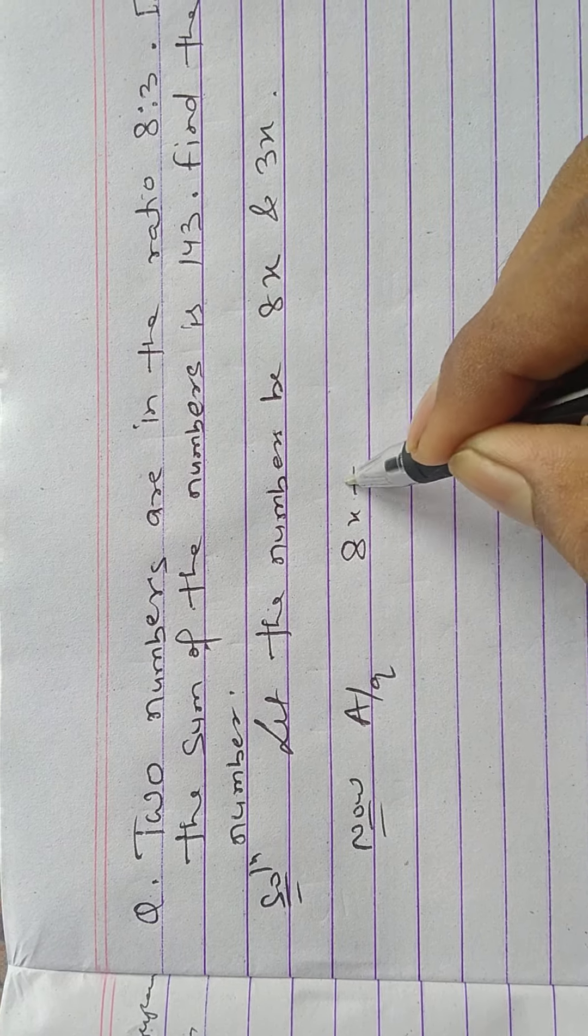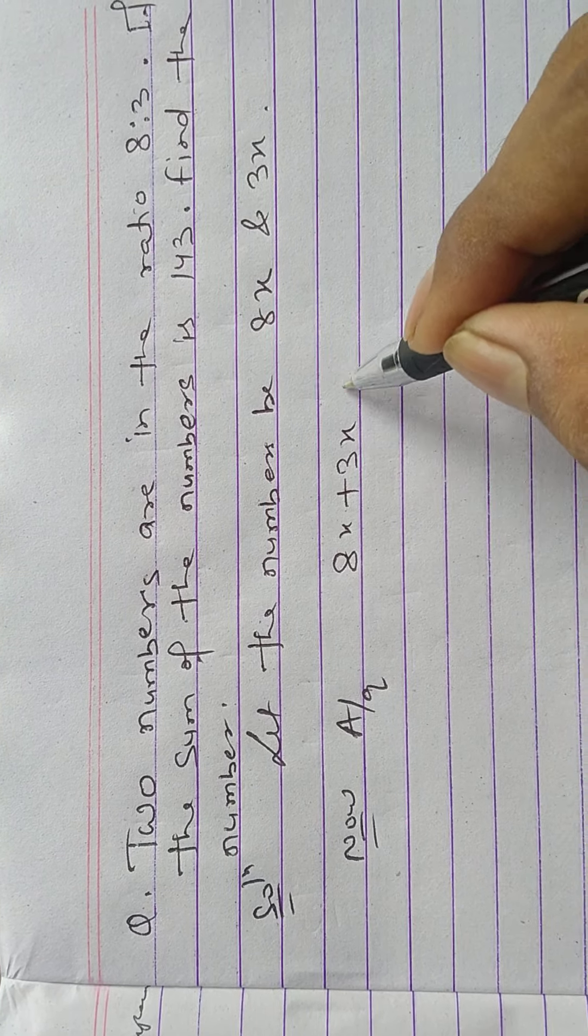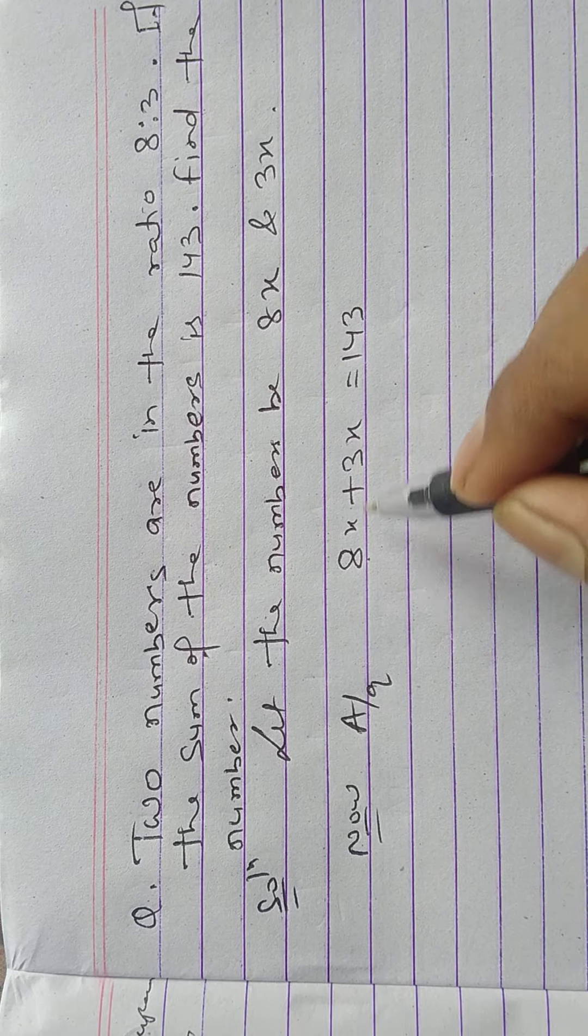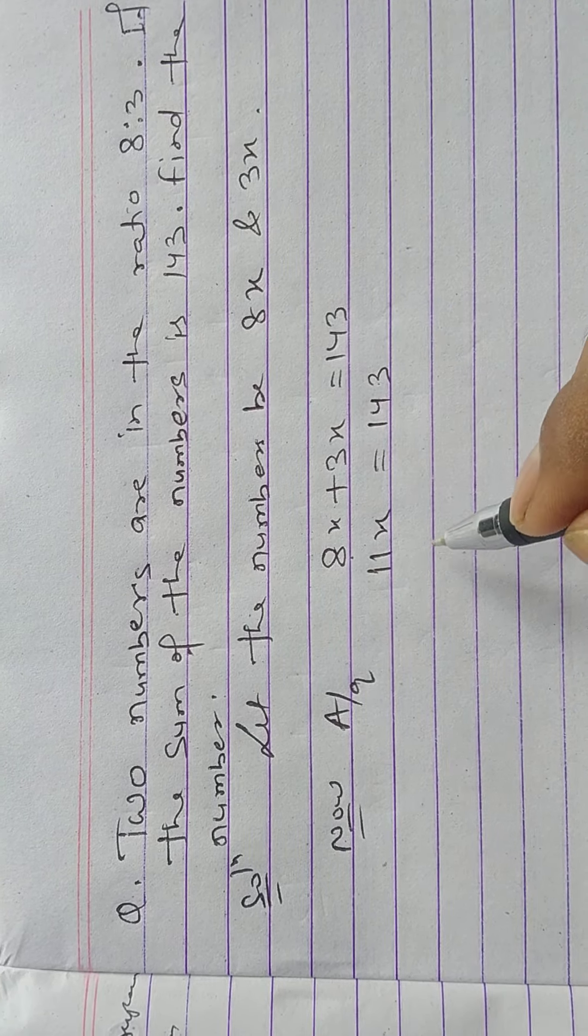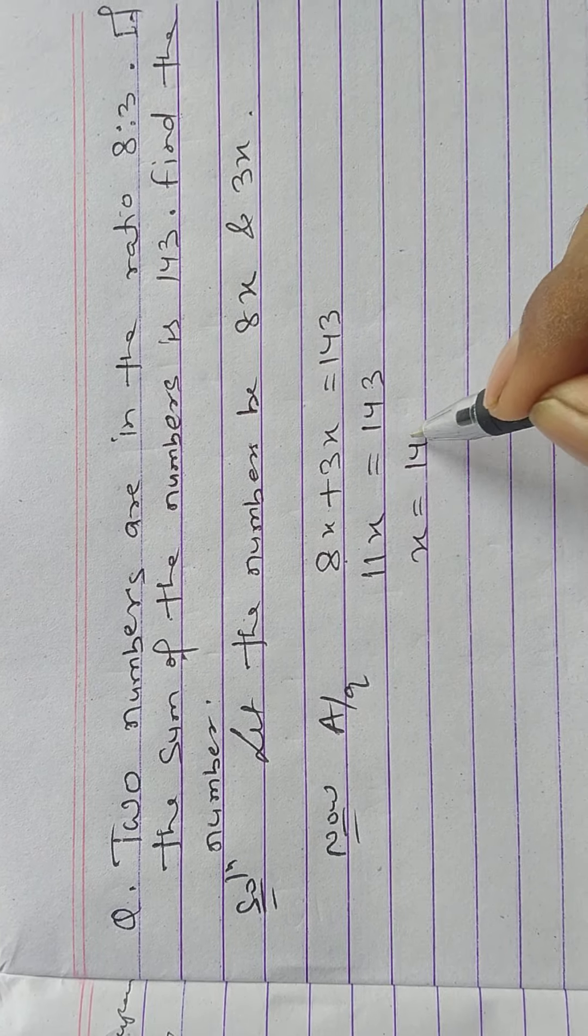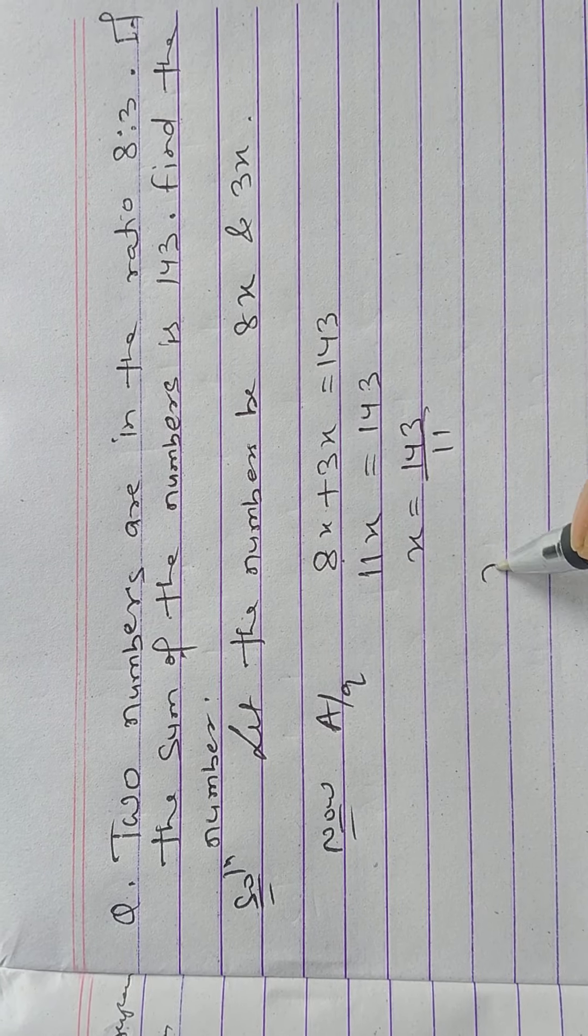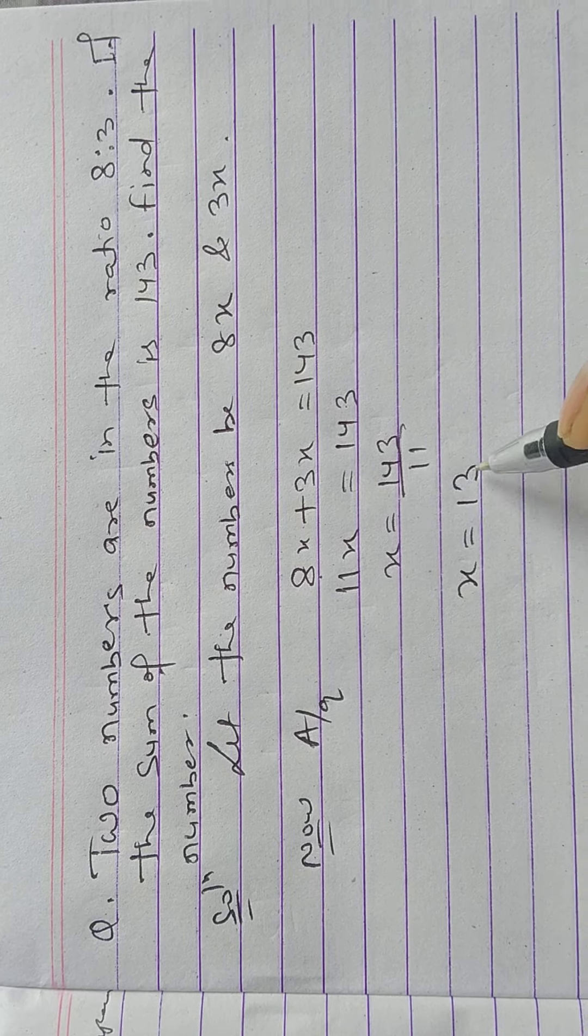So 8x plus 3x equals 11x equals 143, and x equals 143 by 11. Then we get the value of x equals 13.